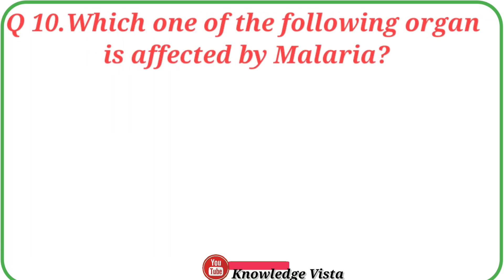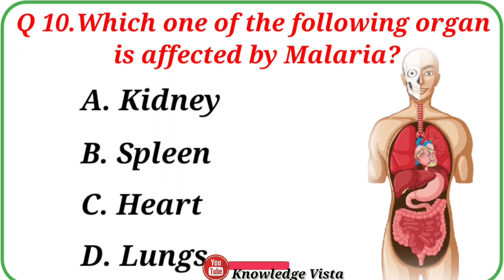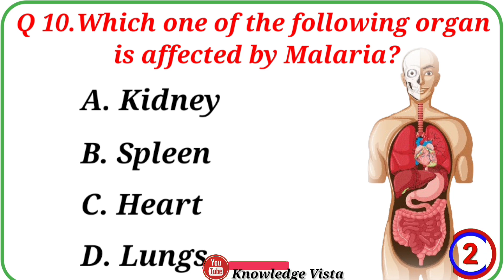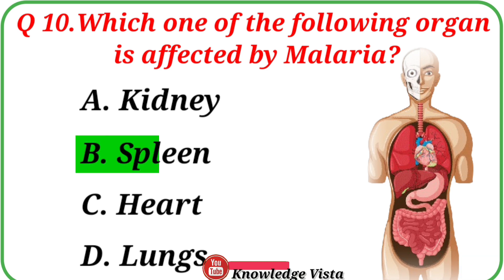Question number ten: Which one of the following organs is affected by malaria? Option A: Kidney, B: Spleen, C: Heart, D: Lungs. Correct answer is option B: Spleen.